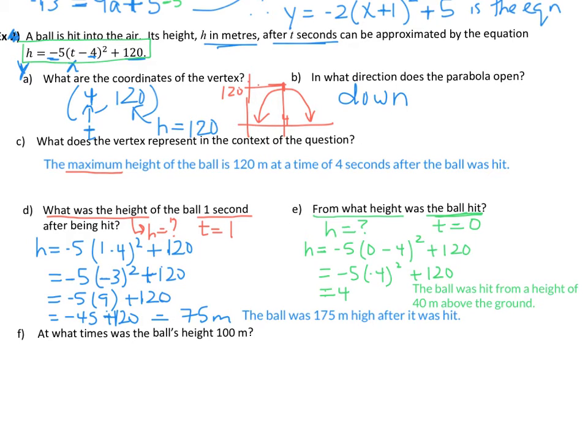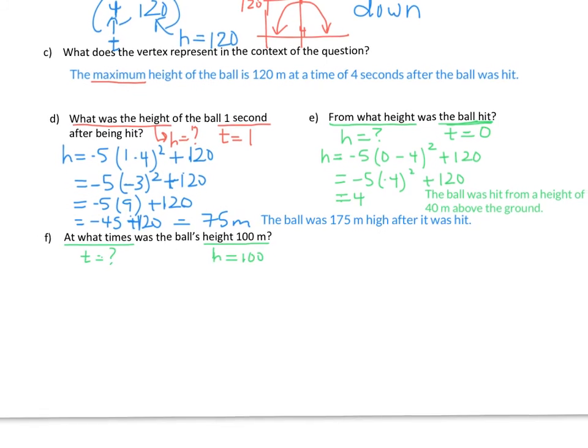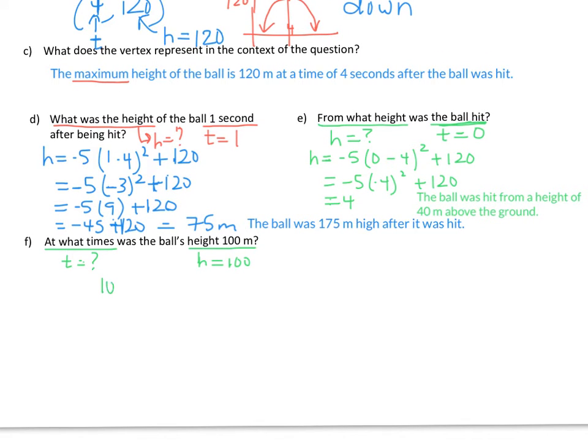Now, the last one's the tricky one. It says, at what times? So here we're solving for t. We need to figure out what t is equal to. Was the ball's height 100 meters? So this is telling us our height is 100. So in the equation, we're going to put 100. Now this one's tricky, so I strongly recommend you follow along with this one. We're going to put 100 in for the height. We're going to have negative 5. We're going to have t take away 4 squared plus 120. Now this is the only kind of quadratic that you can use this method for solving in terms of isolating. So this is going to be like when we're solving a linear equation. We do BEDMAS backwards to get the variable by itself. So I'm going to take the things around the t and undo them backwards.